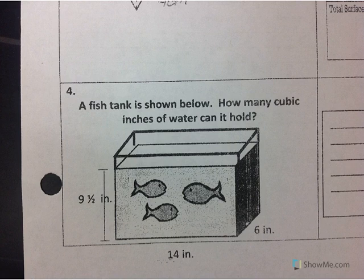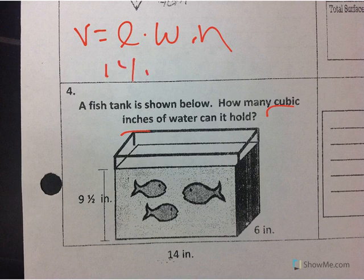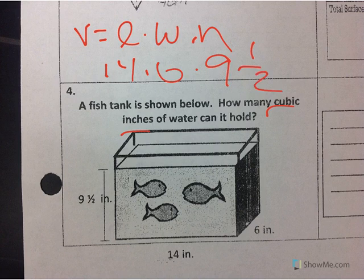Number 4 says the fish tank, how many cubic inches of water can it hold. That tells me I'm doing volume, which is V equals length times width times height. My length is 14, my width is 6, and my height is 9 and a half. Since I have a fraction there, I'm going to change all of these to fractions over 1.